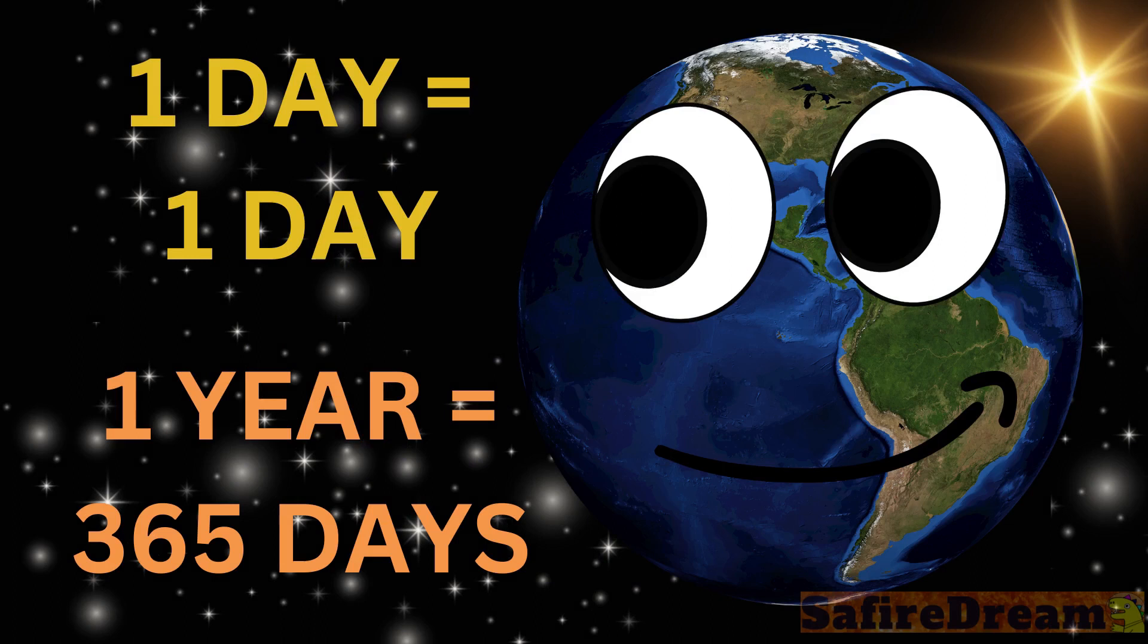One day on Earth lasts one Earth day, and one year lasts, well, one Earth year, which is 365.25 days.